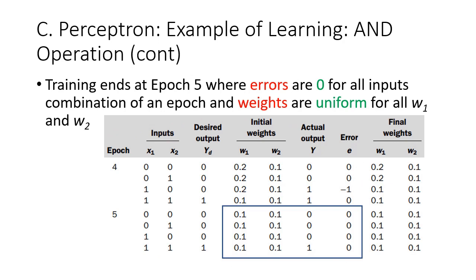Training only ends at epoch 5, because at that point there are no longer any errors, and the weights are uniform: the weights for weight 1 are all 0.1, and the weights for weight 2 are all 0.1. Therefore training stops here.